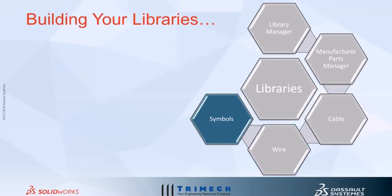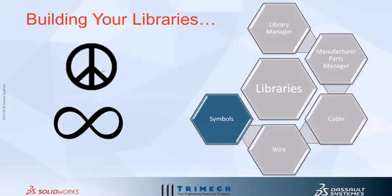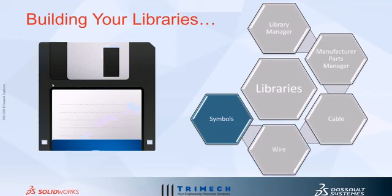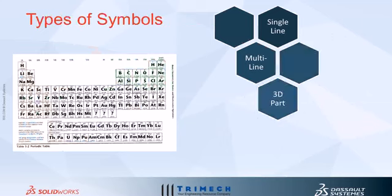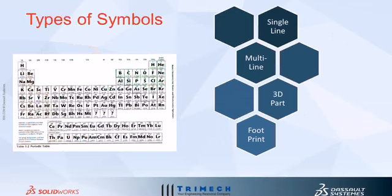Now let's talk about symbols. Symbols can be any number of things — we want something recognizable. Inside the symbols portion, it's a bit more complex than the other managers. There are single line symbols, multi-line symbols, 3D part symbols — which are also manufacturing part symbols — footprints, and PLC symbols.